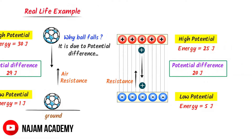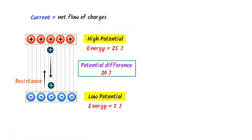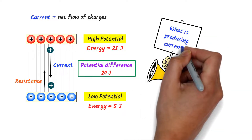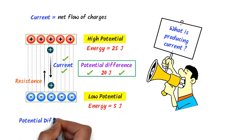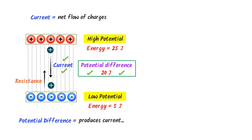Now listen carefully. We all know that current is nothing but the net flow of charge per unit time. When this charged particle moves from high potential region to low potential region, we say that current is produced. So what is producing this current? It is potential difference that is producing the current. Remember that no potential difference means no current. Potential difference always produces electric current.